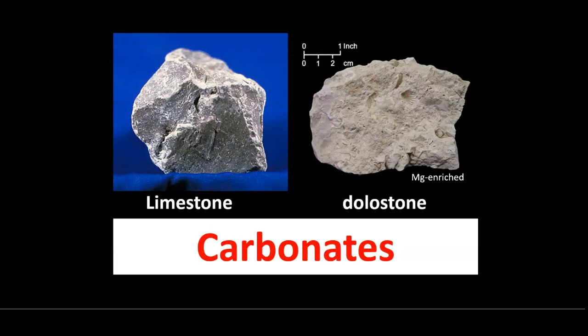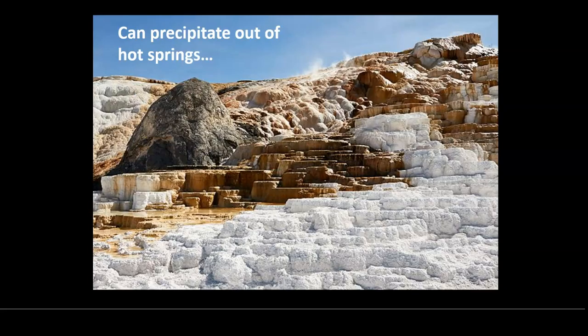Next up, carbonates. There are two big categories: limestone, or the magnesium-enriched form called dolostone. They're very similar, except limestone reacts more aggressively to acid. Dolostone does not react very aggressively — you have to physically powder it, create more surface area, and then it'll react. The principal way of telling the difference is whether it reacts immediately when you put acid on it, or barely bubbles. They can form from evaporation, and one of the main ways is precipitation out of hot springs.